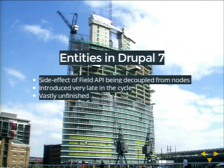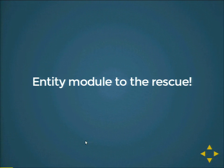Entities in Drupal 7 were really a side effect of the Field API being decoupled from nodes. They were introduced rather late in the cycle — Field API was introduced earlier, but we figured out just really late that we also needed the concept of entities underneath. So the Entity API in Drupal 7 really ended up being basically unfinished. The workaround is the Entity API module which I created — it complements a lot of the missing functionality, but it's not ideal as it has to complement what Drupal core provides.